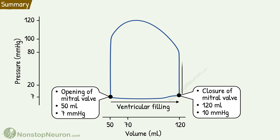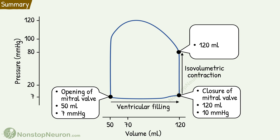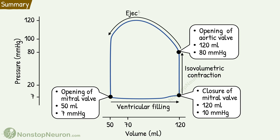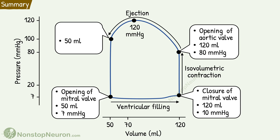Then the mitral valve closes and isovolumetric contraction begins. During this, there is no change in volume — we have 120 ml of blood in the ventricles — but pressure rises to about 80 mmHg, at which point the aortic valve opens. This is followed by ejection of blood, so the volume decreases and reaches the end systolic volume of about 50 ml. During ejection, initially there is a rise in pressure as the ventricular musculature continues to contract, reaching a maximum of about 120 mmHg. Then as the muscles start relaxing, there is a fall in pressure to about 100 mmHg, and the aortic valve closes.